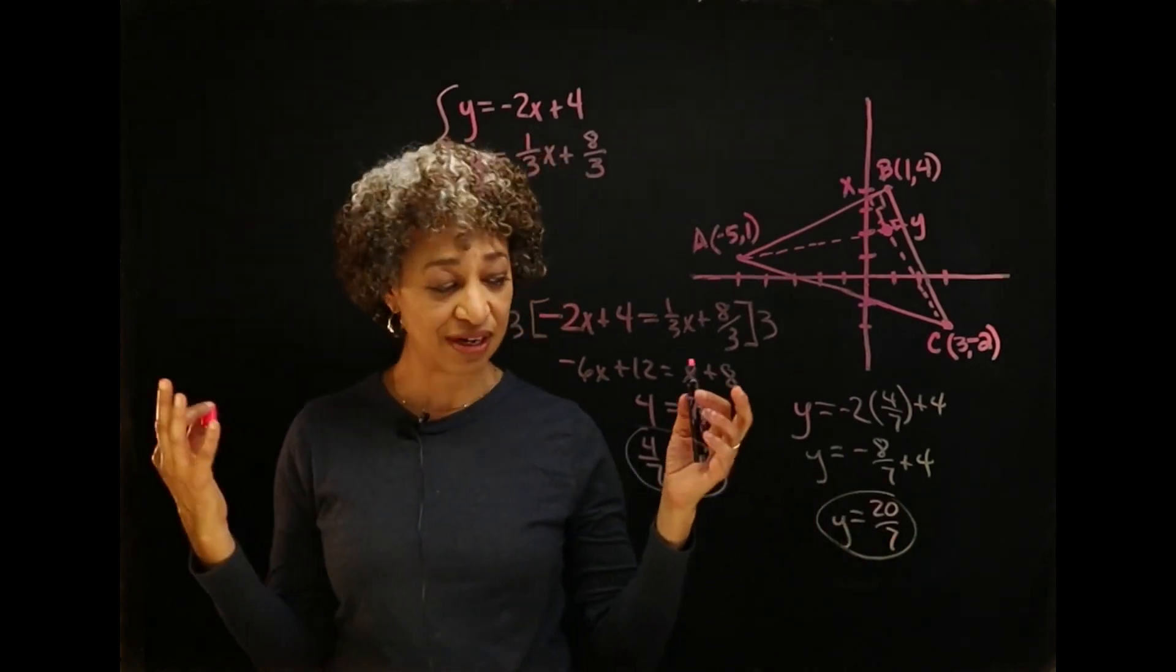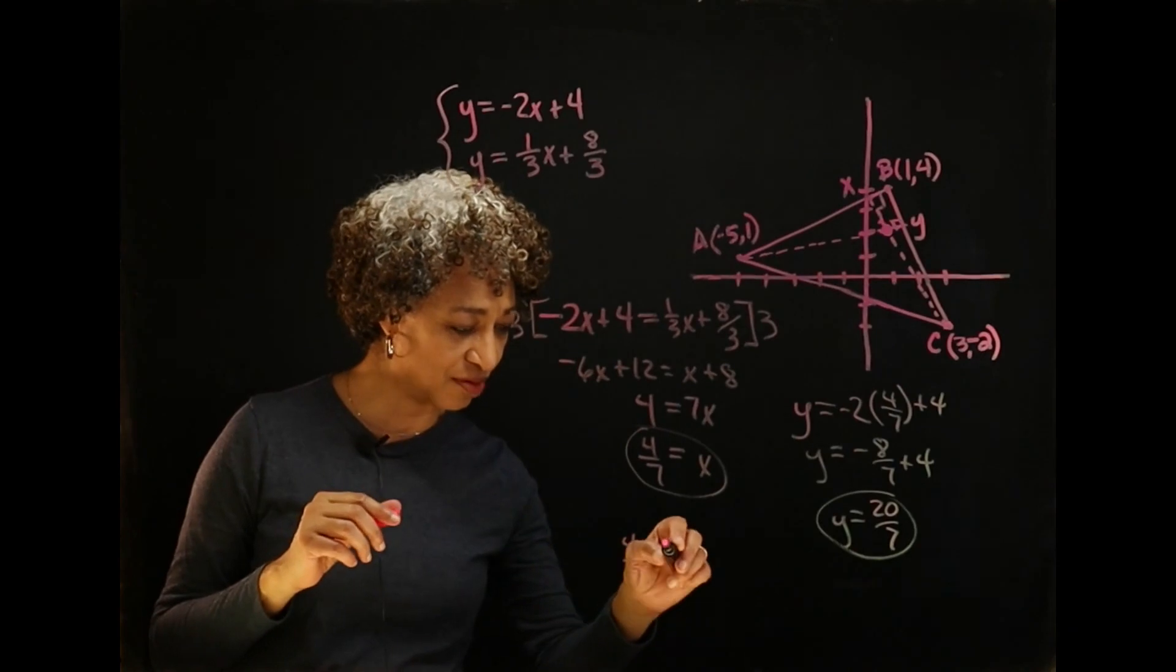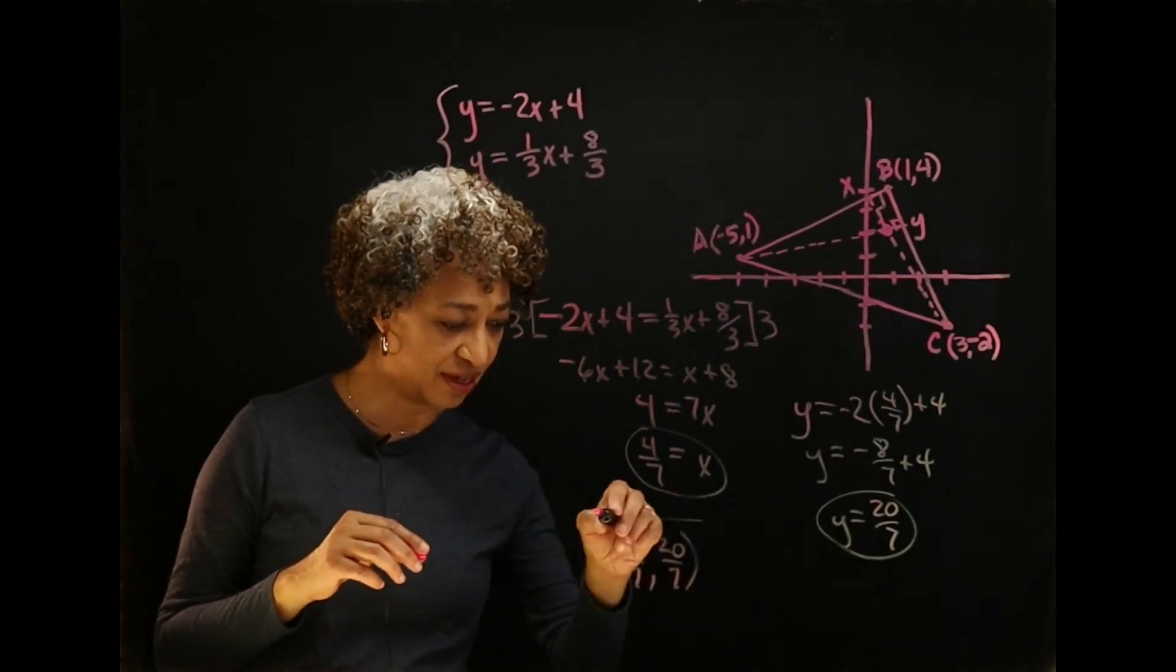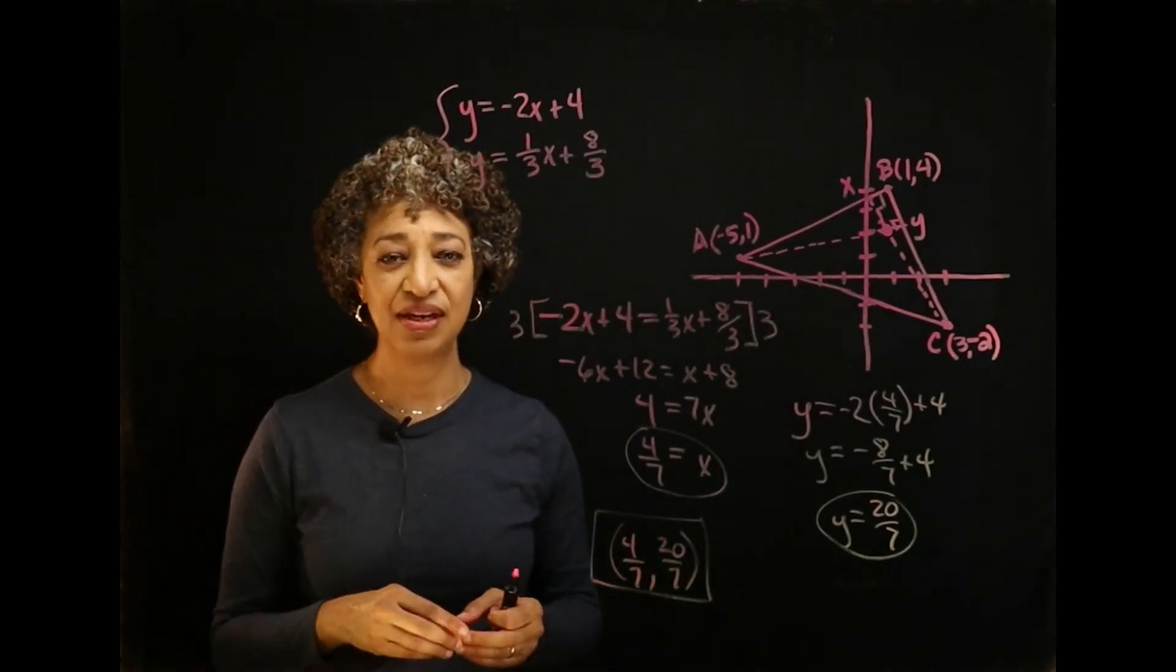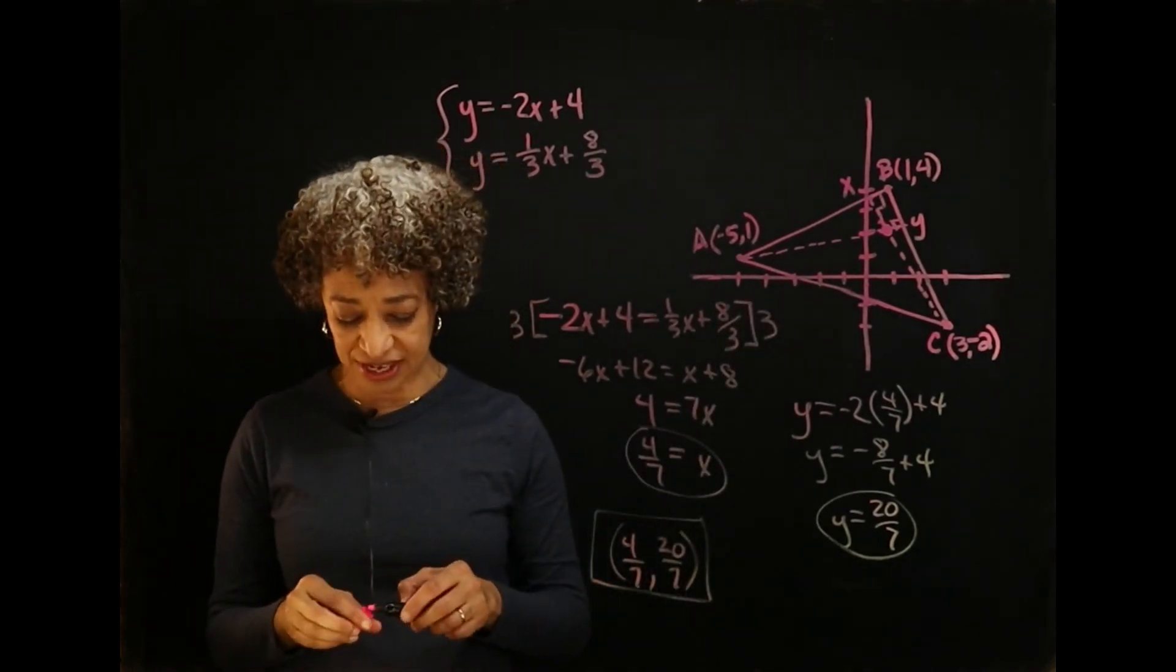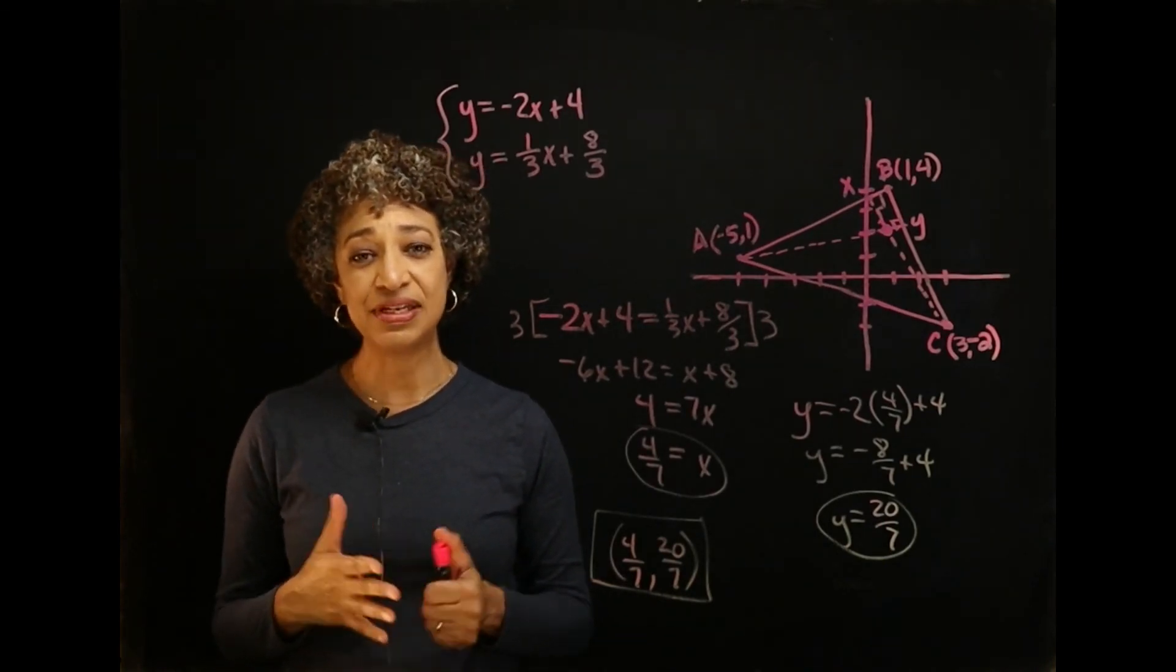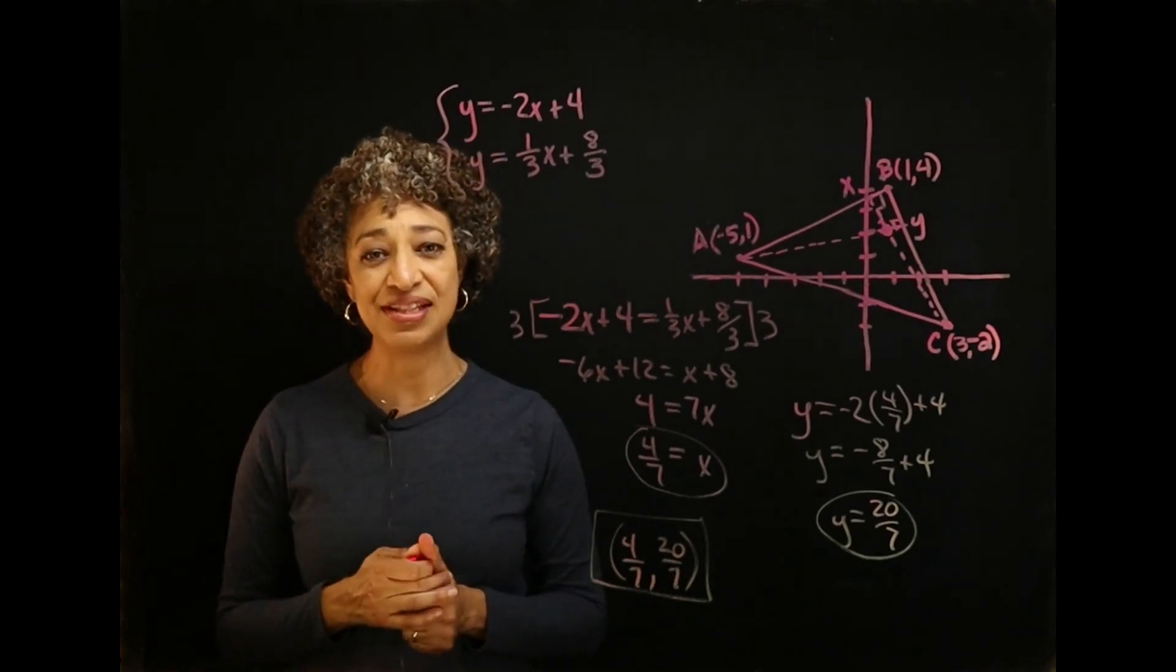So then my orthocenter is 4 sevenths comma 20 over 7. That is the orthocenter of my acute triangle. So thank you for watching. I appreciate your viewing and I hope that this has helped you. Please press like and subscribe and leave a comment. And I will see you in the next video.